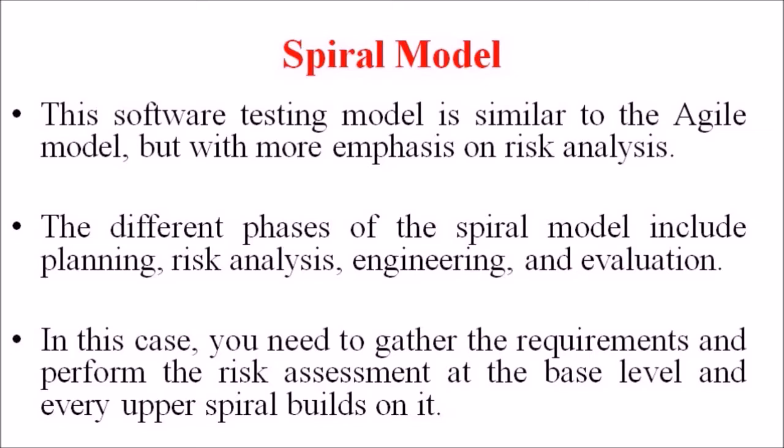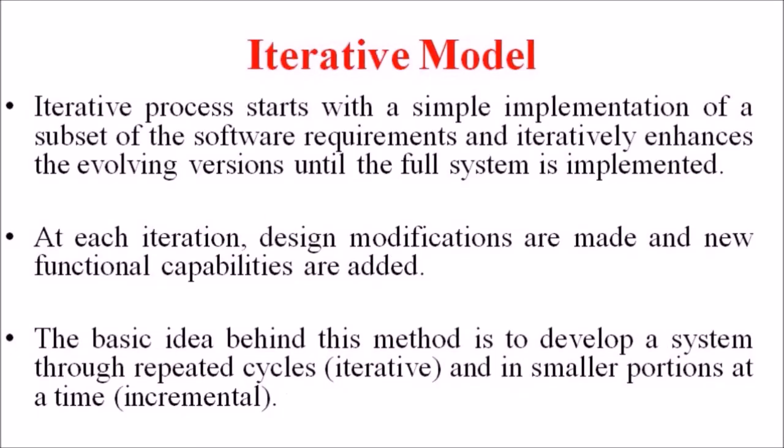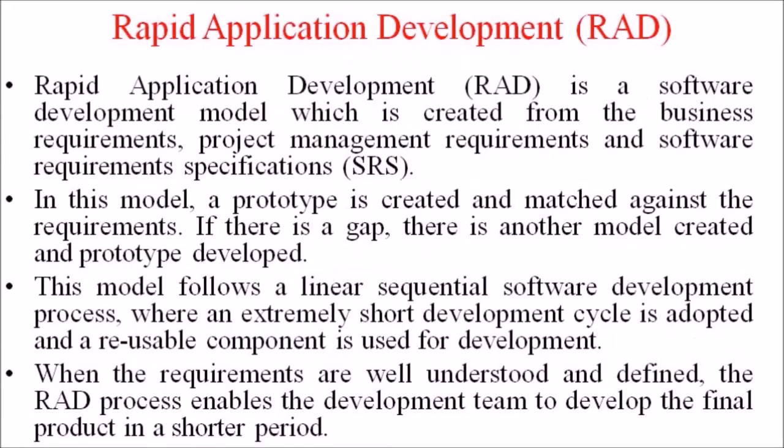In the spiral model, we need to gather the requirements and perform the risk assessment at the base level, with every upper spiral building on it. In the iterative model, the process starts with a simple implementation of a subset of the software requirements and iteratively enhances the evolving version until the full system is implemented. At each iteration, design modifications are made and new functional capabilities are added. The basic idea is to develop a system through repeated cycles and in smaller portions called increments.